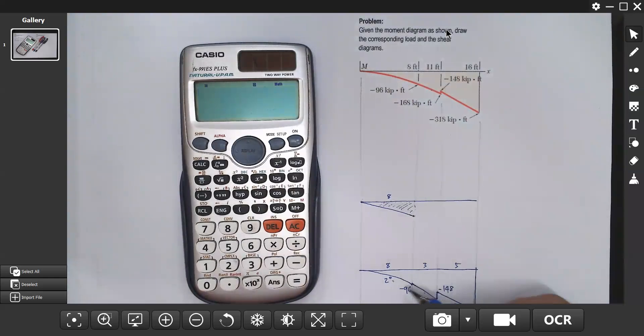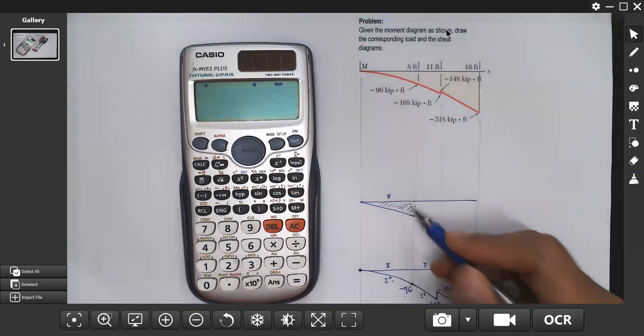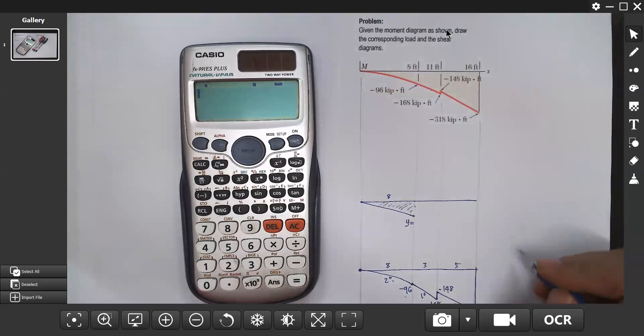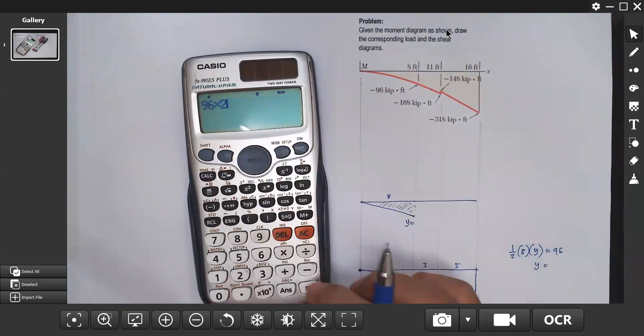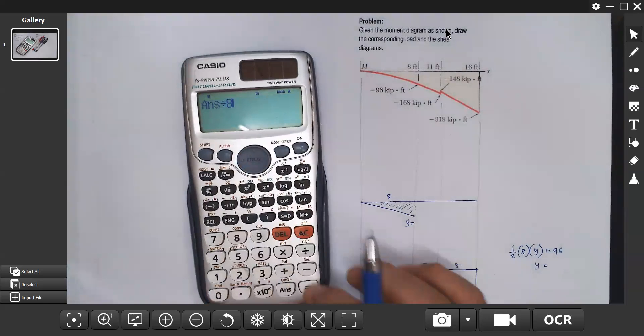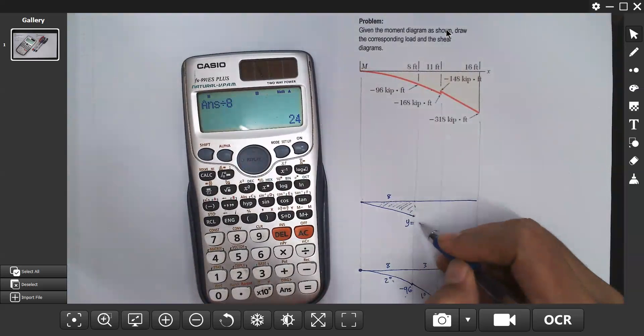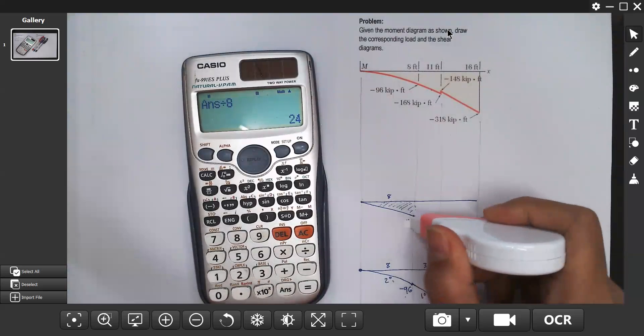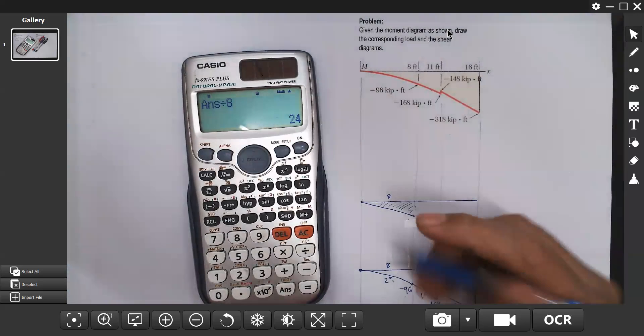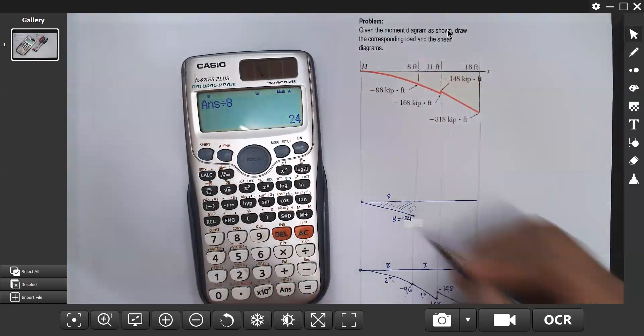The area is equal to the change in moment. The moment changes from zero to negative 96. So if we assume this one as y, then solving for y we have one half of eight times y equals 96. Solving for y: 96 times two divided by eight equals 24.